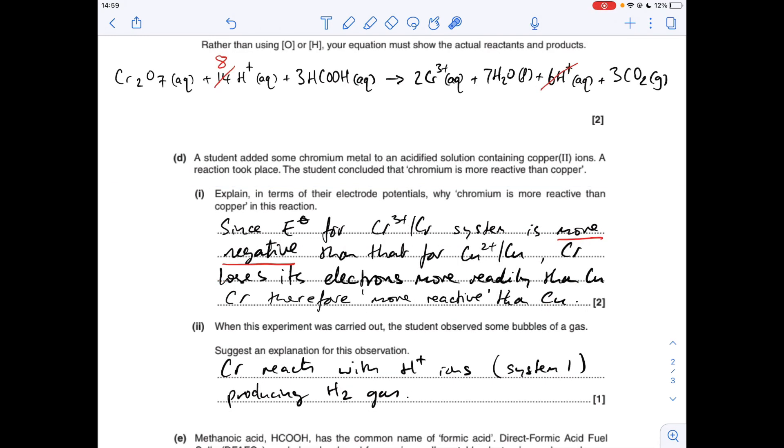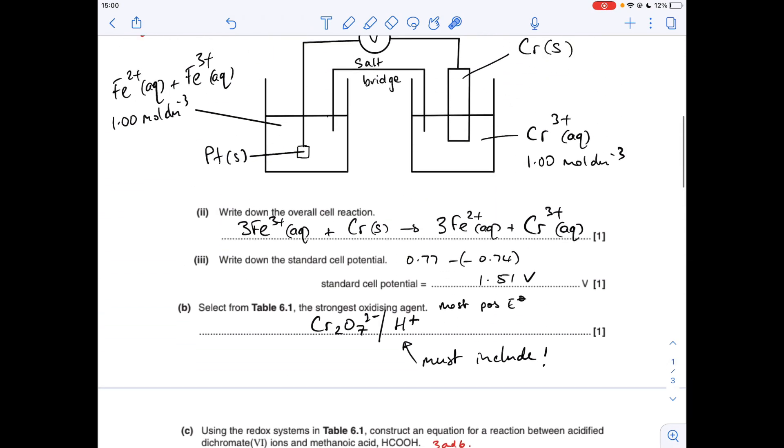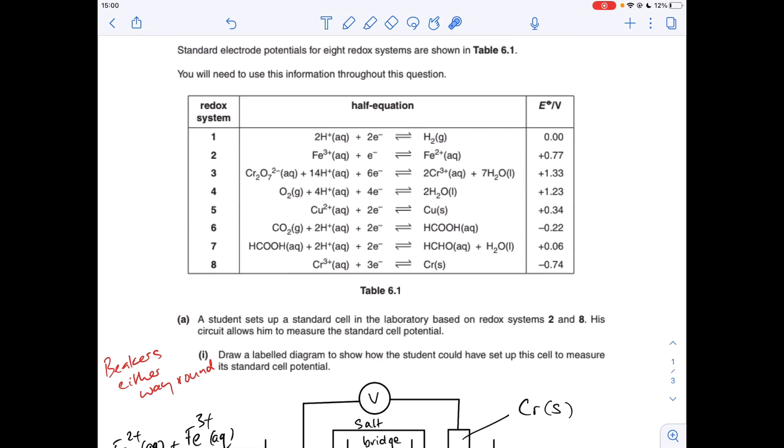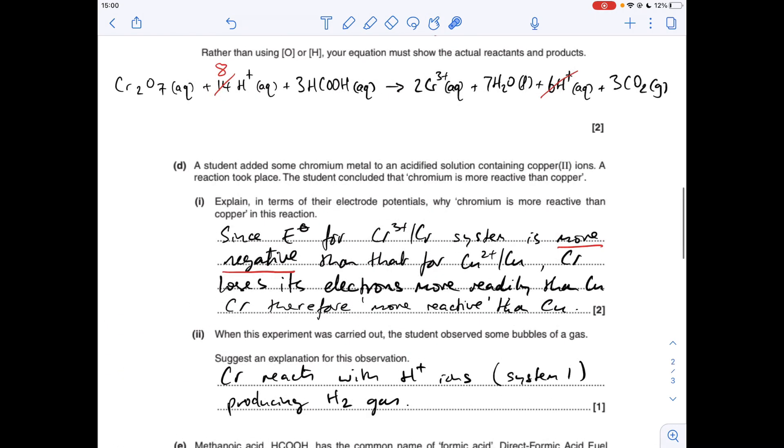So moving on to part D, we've got to explain in terms of electrode potentials why chromium is more reactive than copper. So if you think about how metals react, when they react, they lose their electrons to form positive ions. So in terms of electrode potentials, the species most likely to lose electrons will be the one with the least positive standard electrode potential. Because obviously a less positive standard electrode potential means the system will move this way and lose the electrons. So you can see the chromium minus 0.74 versus copper plus 0.34. So chromium is more likely to lose electrons than copper. And so chromium is more reactive. So I've just phrased it like this. Since the electrode potential for Cr3 plus Cr system is more negative, or you could say less positive there, than that for Cu2 plus Cu, Cr loses its electrons more readily than Cu. Therefore, Cr is more reactive than copper.